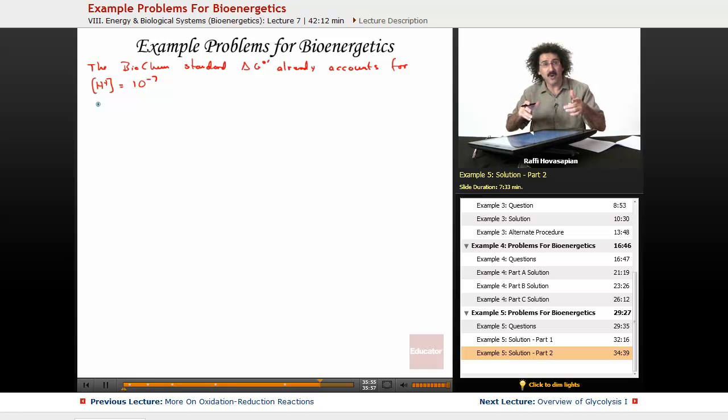So a one molar concentration hydrogen ion, negative log of one, you're going to get a pH of zero. But we can't do pH of zero. This is why the biochemical standard uses a pH of seven. That's why we have this standard plus that little mark that lets us know that we're at pH seven.